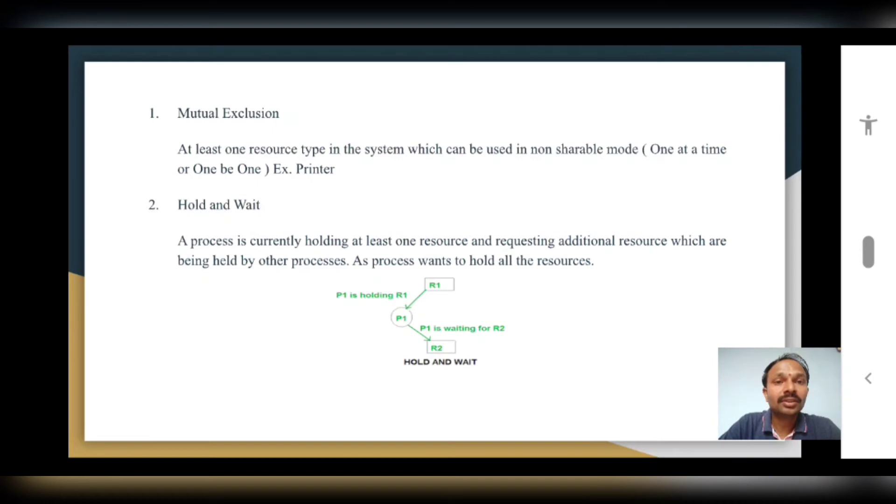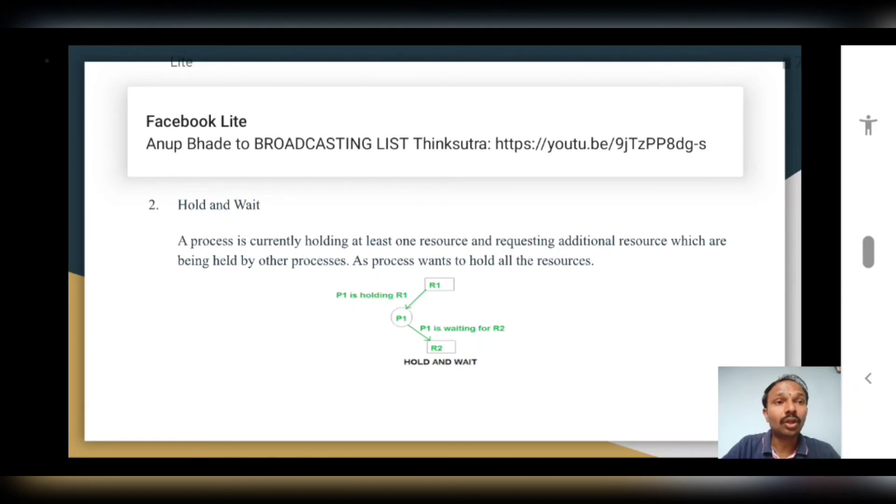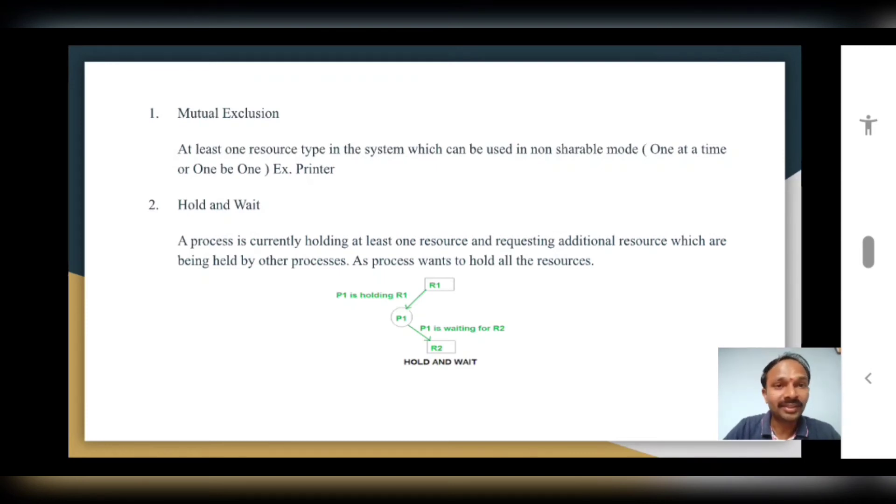A process is currently holding at least one resource and requesting additional resources which are being held by other processes, as the process wants to hold many resources or all the resources. Now with this second condition, 50 percent of the deadlock will be applied for our operating system.